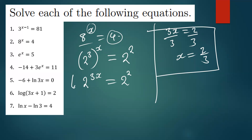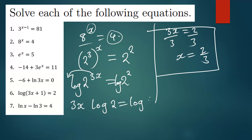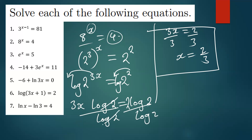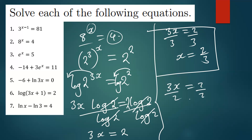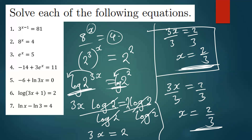Dividing by 3 gives x = 2/3. The correct formal approach is to introduce log or ln on both sides. Dropping down the powers gives 3x · log(2) = 2 · log(2). Dividing both sides by log(2), those cancel, leaving 3x = 2, and dividing by 3: x = 2/3 — the same answer either way.